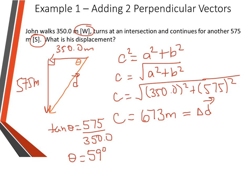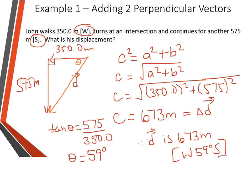So we always want to round to whole degrees. Then we need to write a therefore statement — it doesn't have to be too fancy. So the delta d, our displacement, is 673 meters. And then we are going west — due west — and we are going 59 degrees south. Those directions can be a little bit tricky, but just look at your diagram: you go west first, and then you go south by 59 degrees. So that is our displacement. And that is an example where we're adding perpendicular vectors — vectors that meet at a right angle.